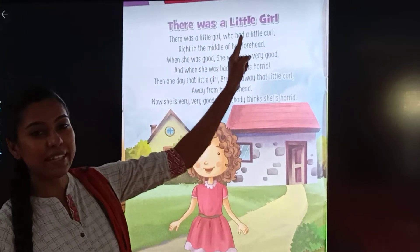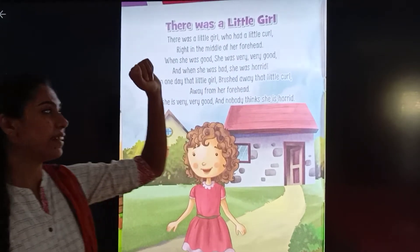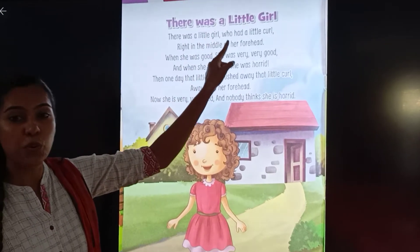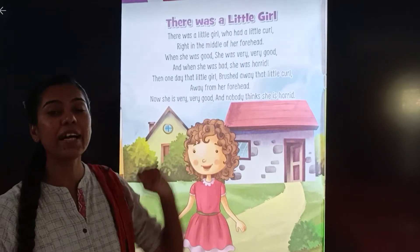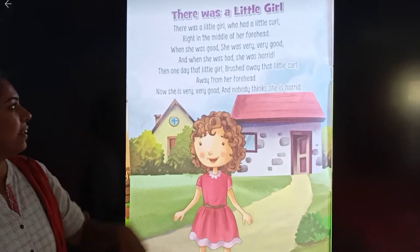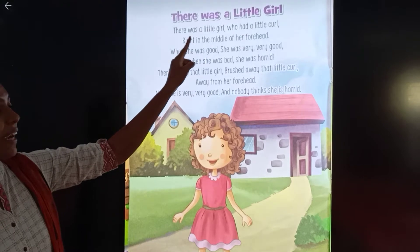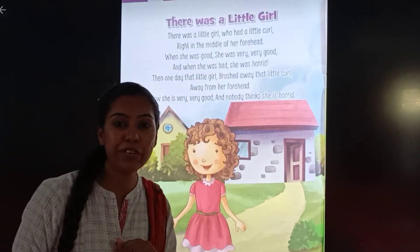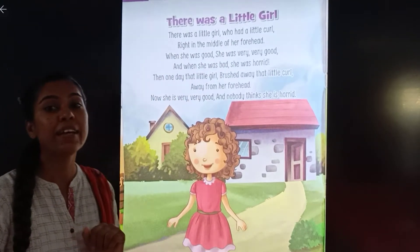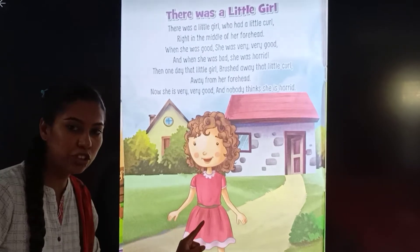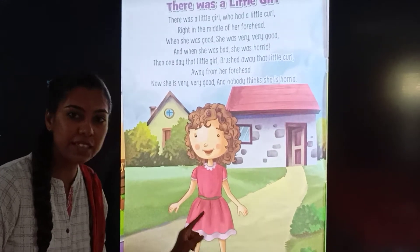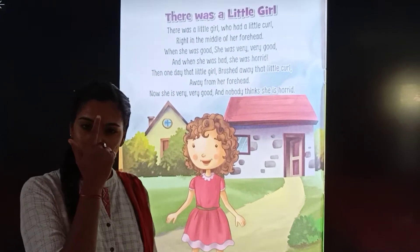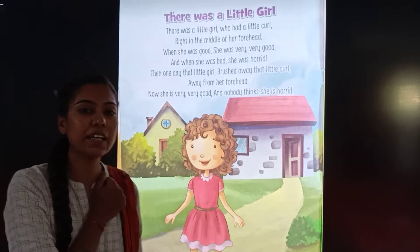There was a little girl. There was a little girl who had a little curl, right in the middle of her forehead. A girl was a little girl and her forehead in the middle of a little curl was a little curl.